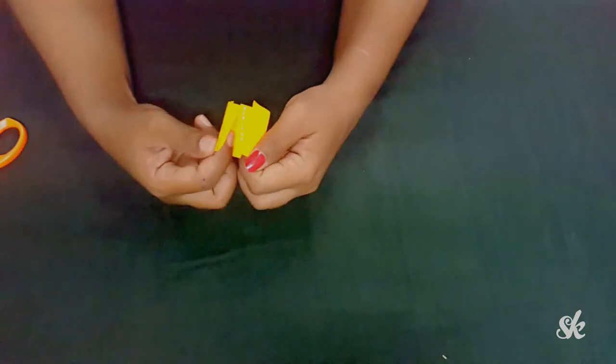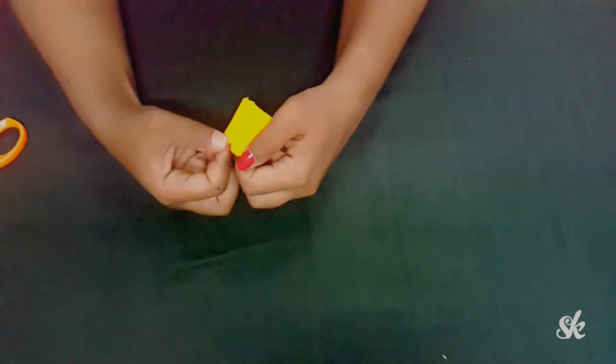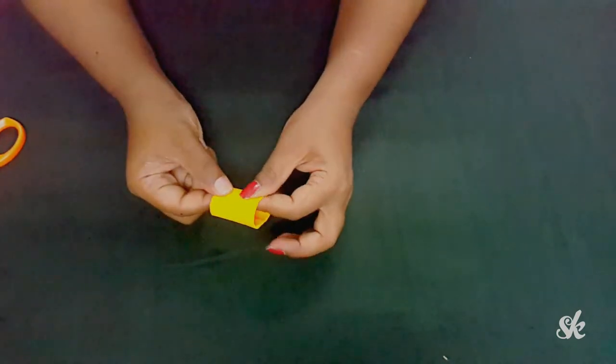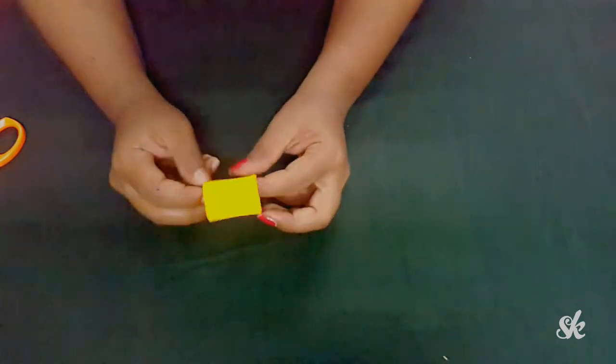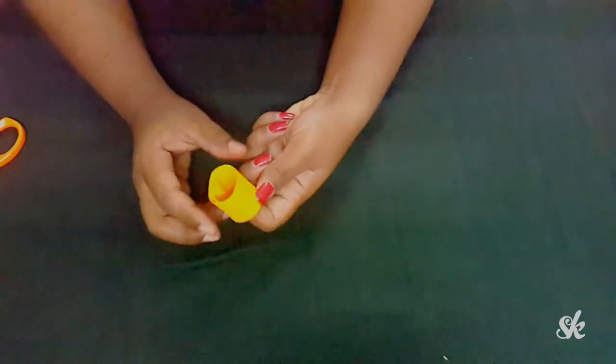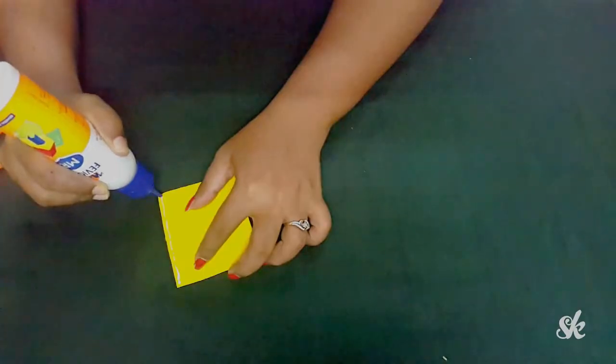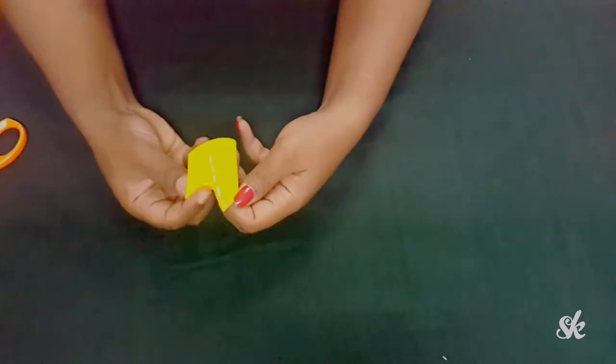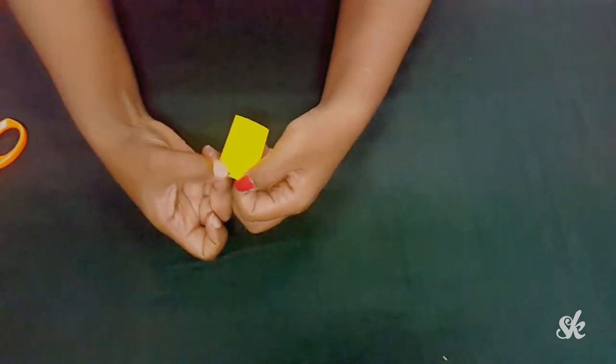Now roll up the strip like this and push it into the glued end pocket and press firmly to fix it. Repeat the same process again to make more flowers. Just be a little careful while fitting in the unglued end into the glued end pocket.